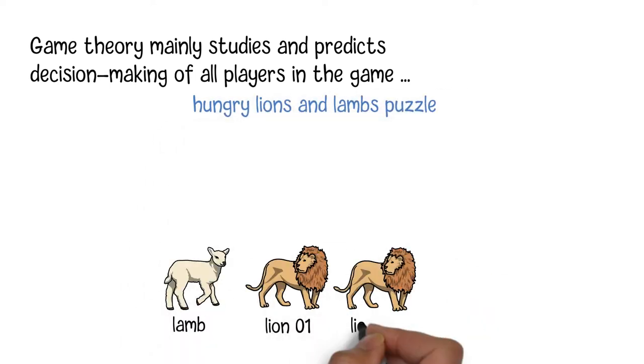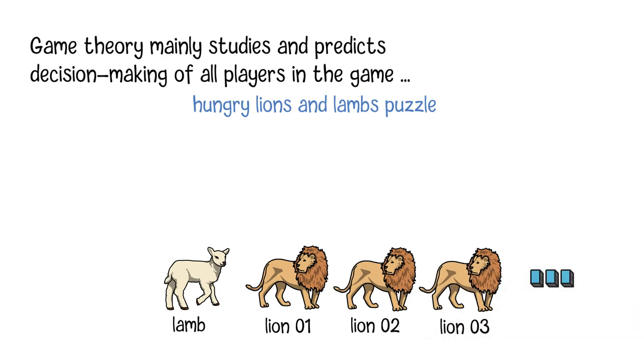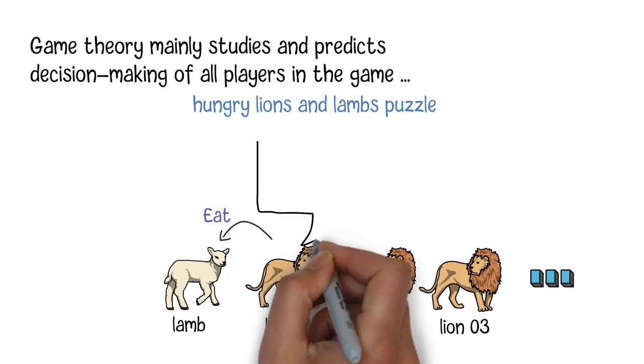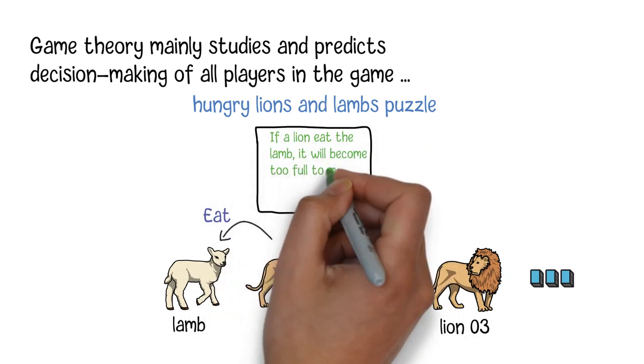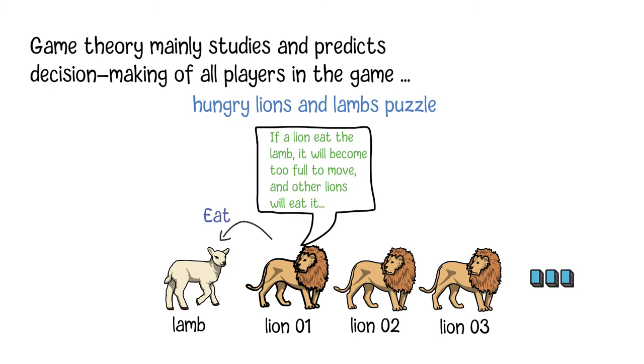Suppose there is a lamb and a number of hungry lions standing in a row. The lion standing close to the lamb can choose to eat the lamb. However, if it does that, it will be too full to move and the lion standing beside it will choose to eat that overeating lion.